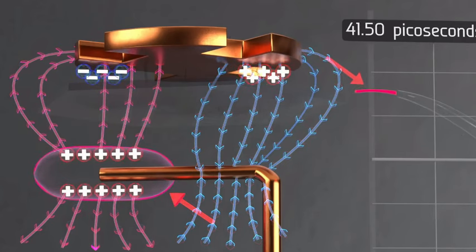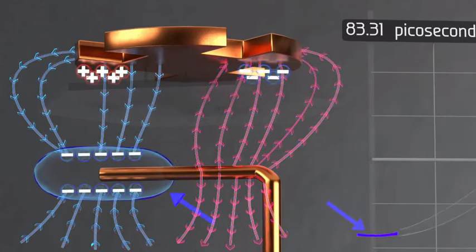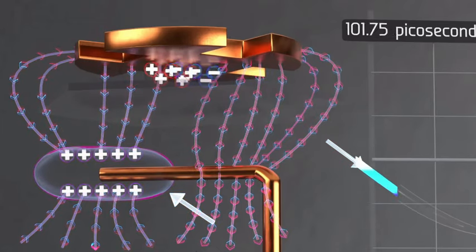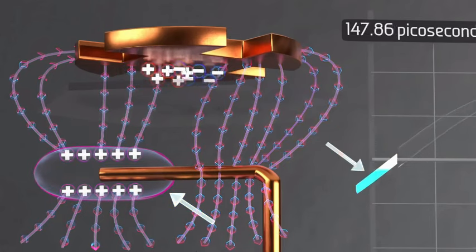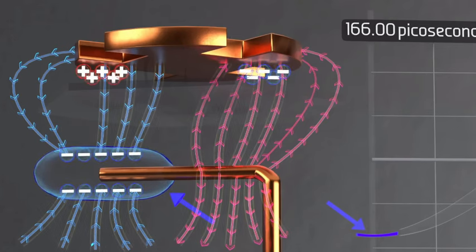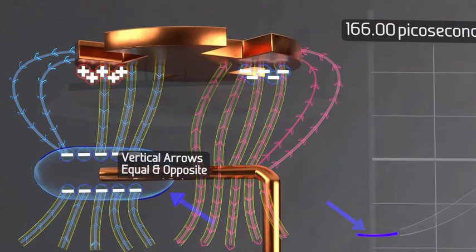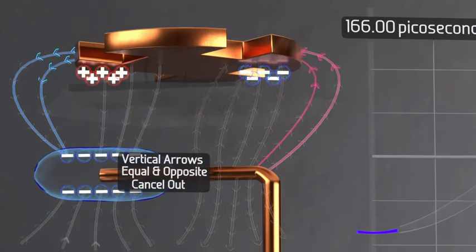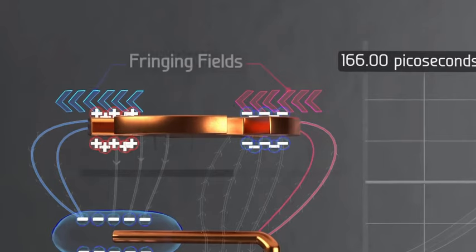However, when we reverse the voltage to the copper feed wire 42 picoseconds later, we have a concentration of positive charges or a lack of electrons at the end of the wire, and thus the electrons in the patch flow to the other side. The voltage in the patch is flipped, and the direction of the electric fields are also flipped, because the feed wire voltage oscillates back and forth, 42 picoseconds between one peak and trough. The electric fields in the patch will also oscillate as the electrons, or current, flows back and forth.